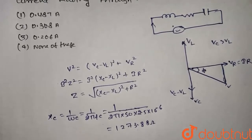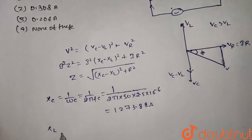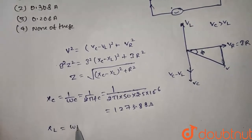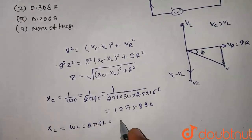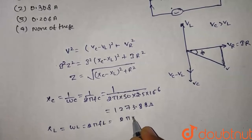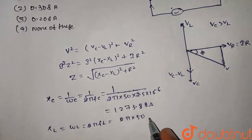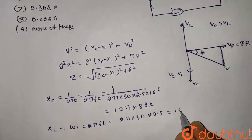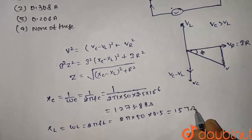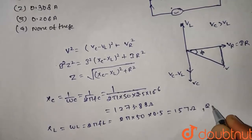Now we find XL. XL is equal to omega L, which is 2 pi f L. So 2 times pi times 50 times 0.5, which equals 157 ohm. And R is equal to 10 ohm.